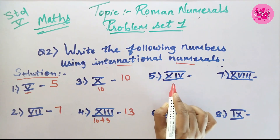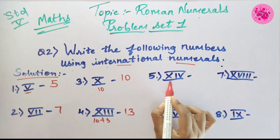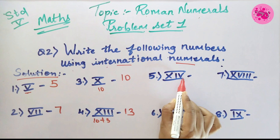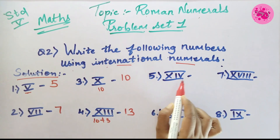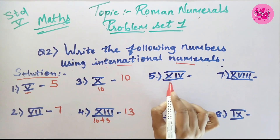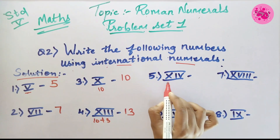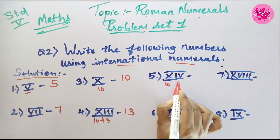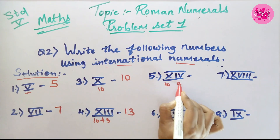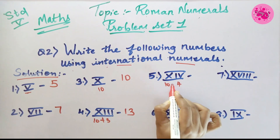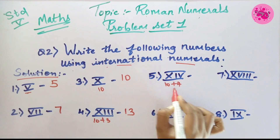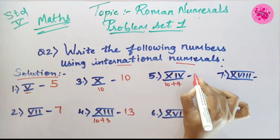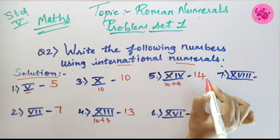Number 5: The Roman numeral XIV is given. X is the symbol of 10 and IV is the symbol of 4. That means 10 plus 4, so we get the answer 14.